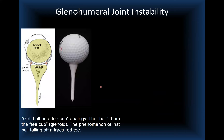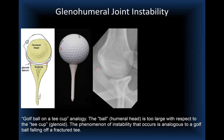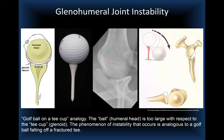The most used analogy for the glenohumeral joint is a golf ball on a tee, with the humeral head being the golf ball — too large relative to the tee, which is the glenoid. Instability, particularly with a soft tissue or bony Bankart fracture, is analogous to the golf ball falling off a fractured tee. An axillary view shows the relationship of the small glenoid fossa to the larger humeral head.